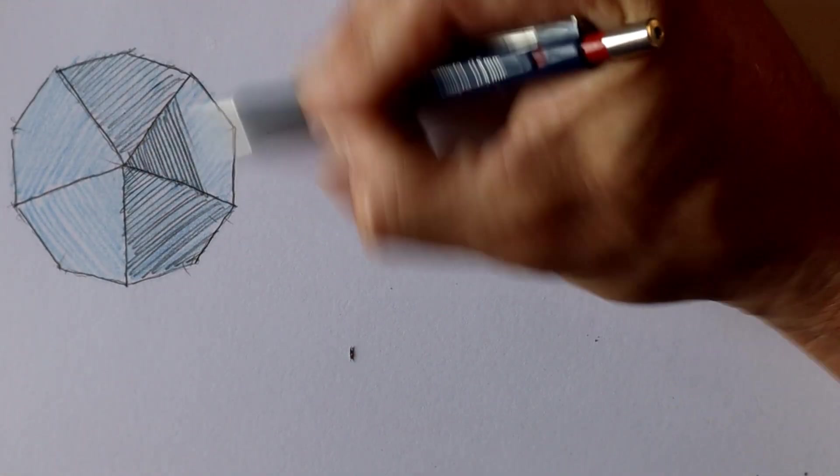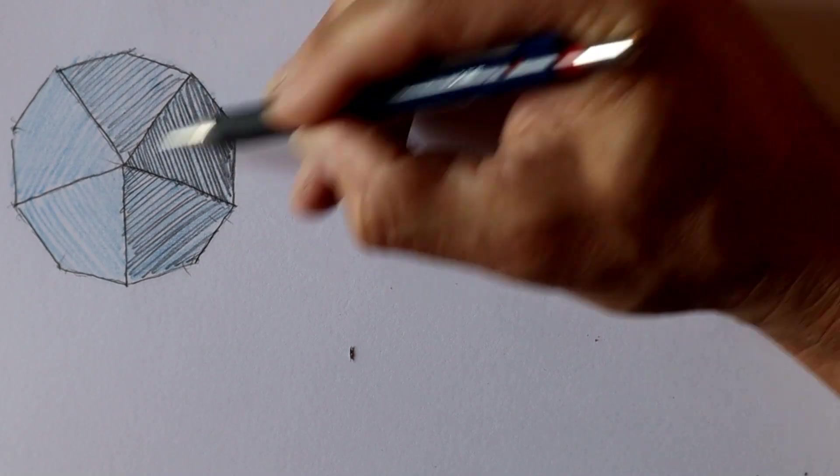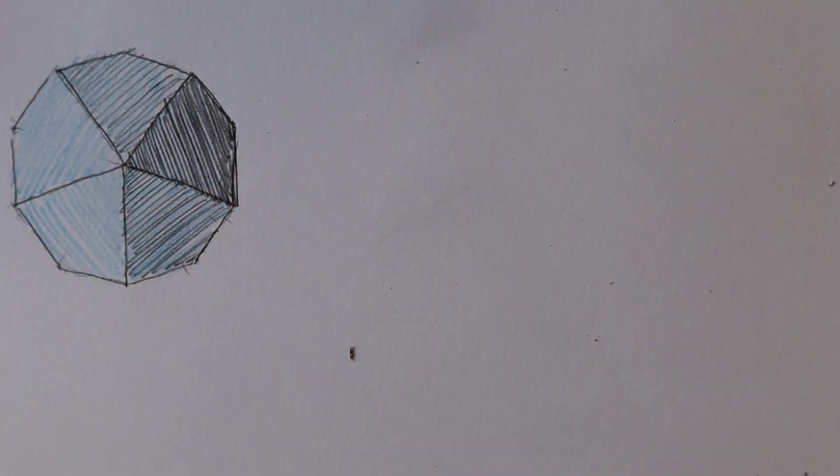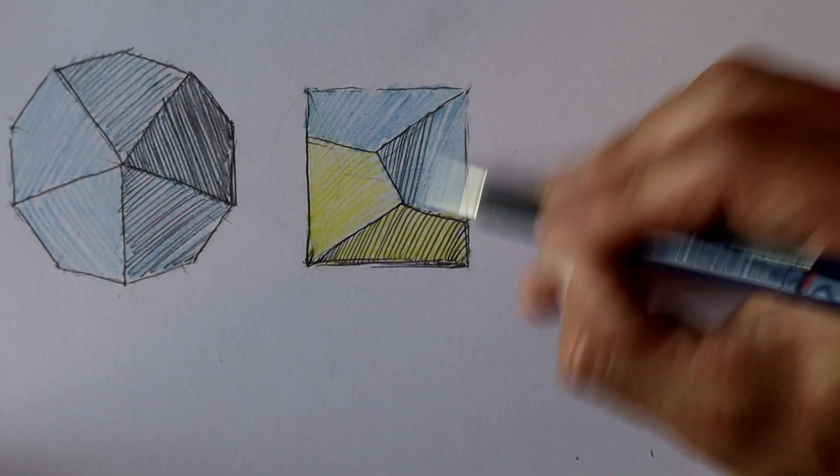Looking from the top, it's like any pentagonal trapezohedron. The outline is a regular decagon. But from another angle the outline is a rectangle.